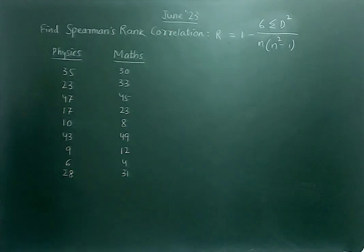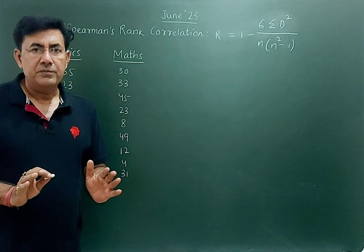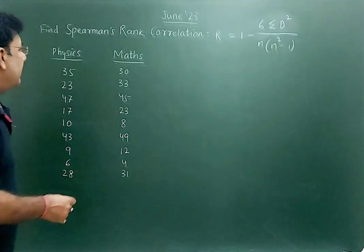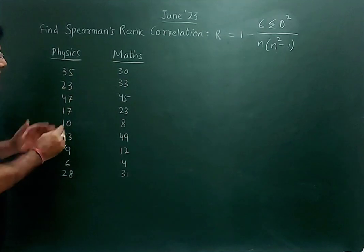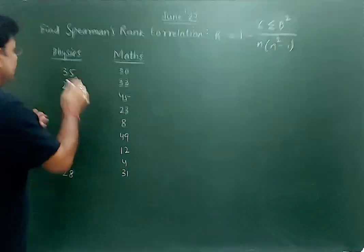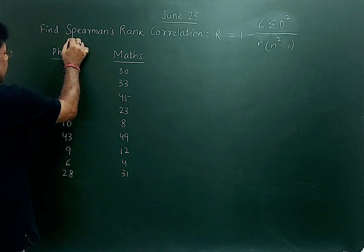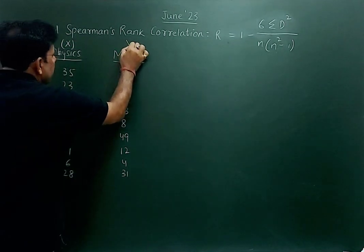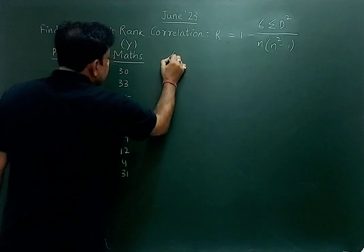It's very simple and easy. Let's start. First, we will give ranks to both variables — let physics be given the rank x and math the rank y. Now find out x minus y.